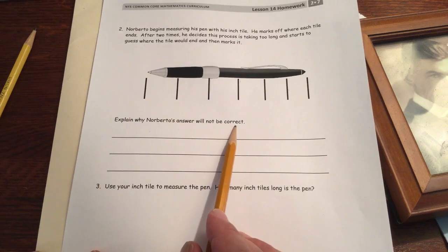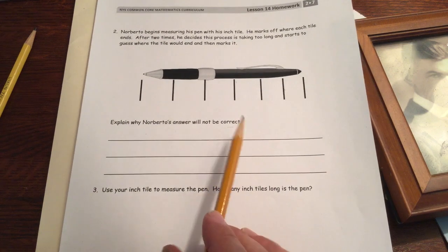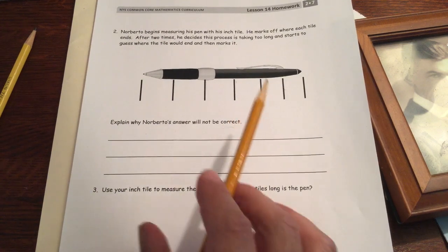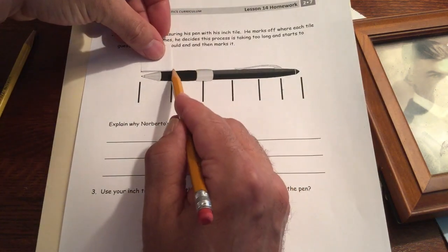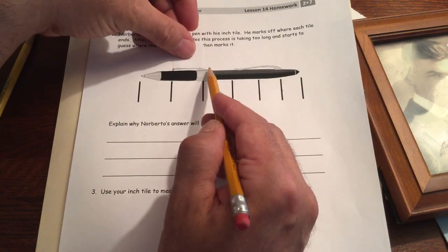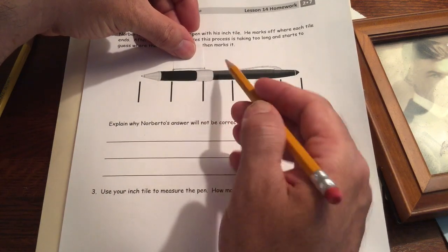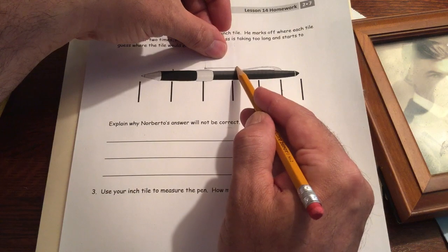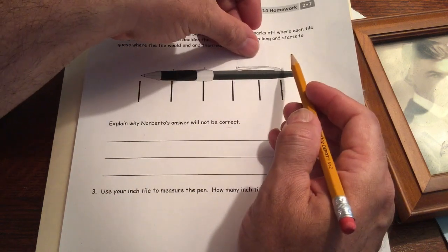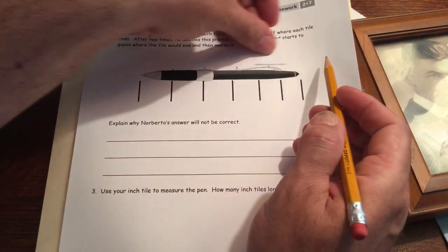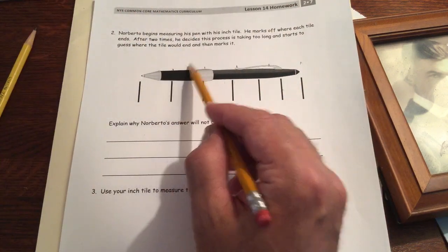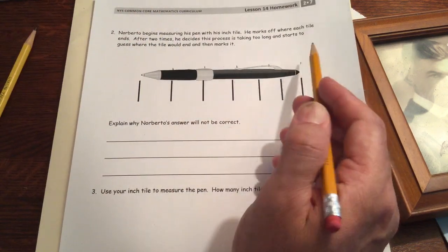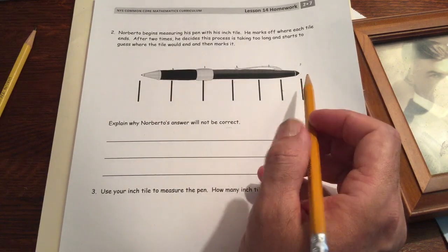Okay, why will his answer not be correct? I mean, we could measure it and see exactly how long it is. We could use a ruler or we could do what he should have done, which was just not eyeball it at the end, but keep marking and moving. Mark your unit and then move it. Mark your unit and then move it. Mark your unit and then move it. And there we go. He should have one, two, three, four. He should have five inches and he got an extra inch because, what's the difference?